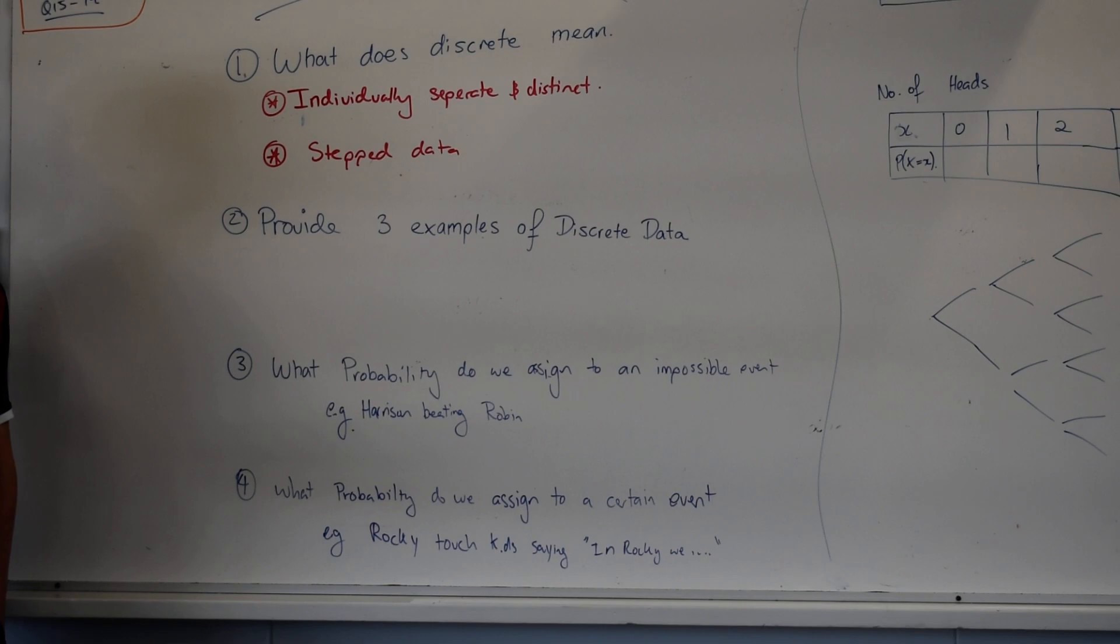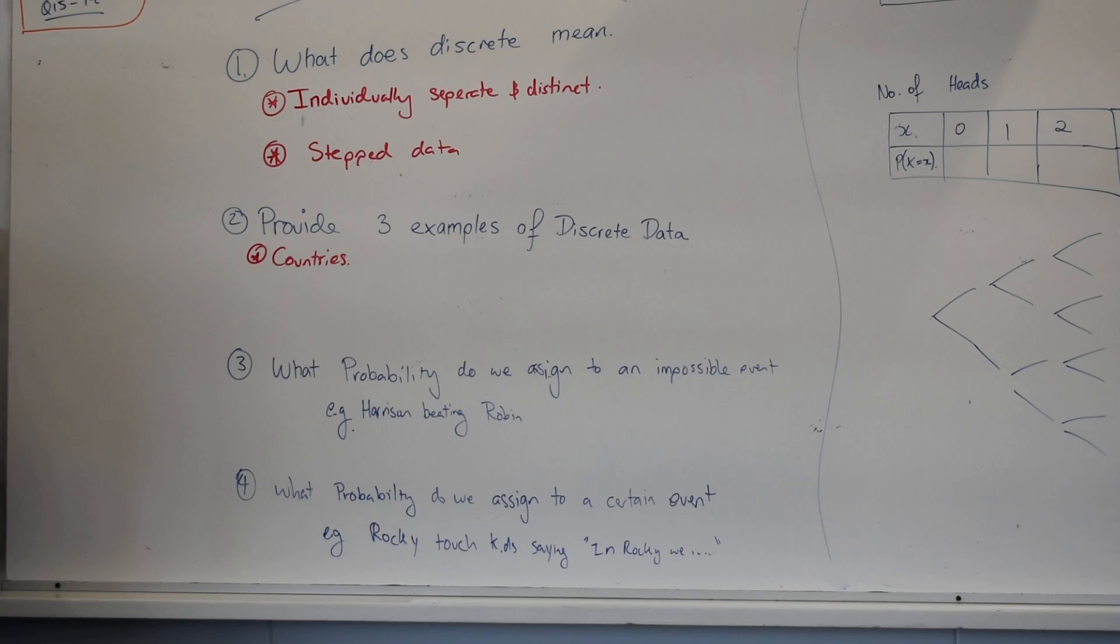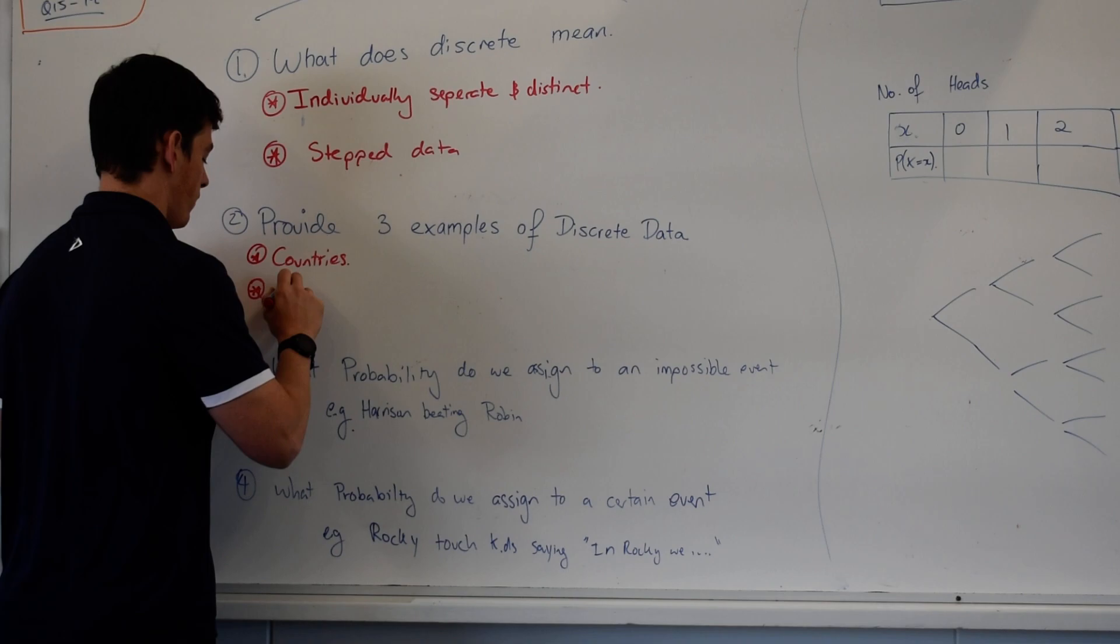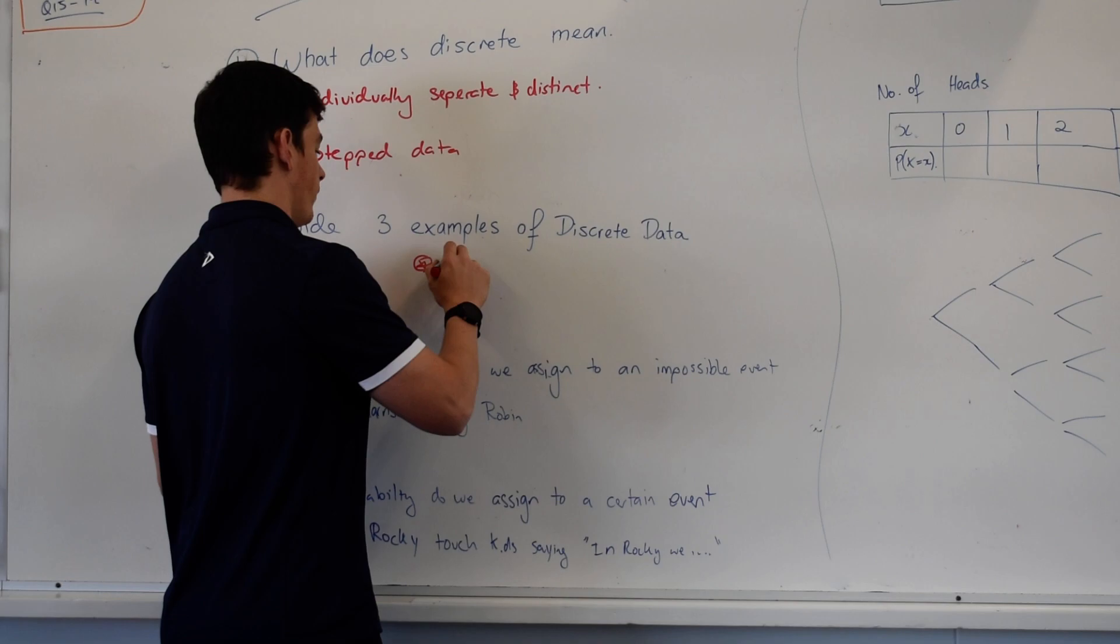Provide three examples of discrete data. Yeah, good countries. Great example. That would be a categorical discrete data. Not the greatest example. I don't really want categorical. Give me some numerical discrete data. Rolling of dice. Oh, rolling of dice. Very good. Flipping a coin. Flipping a coin.